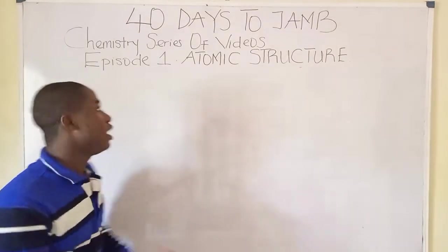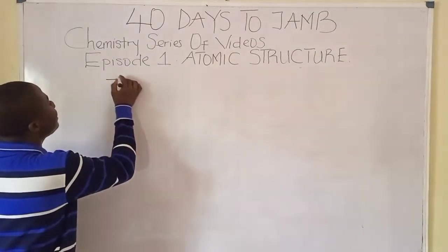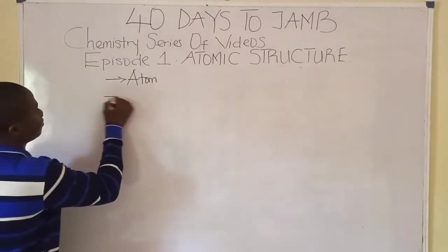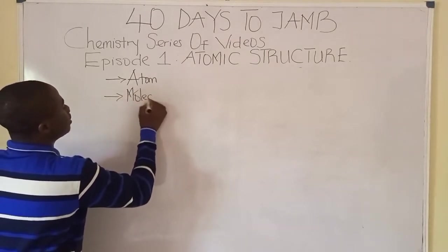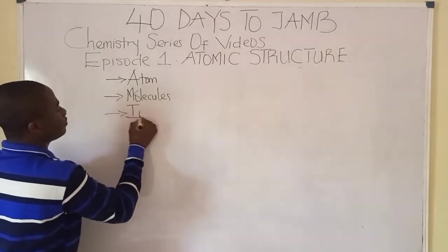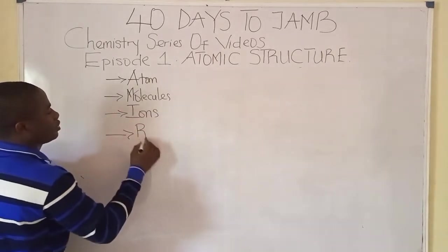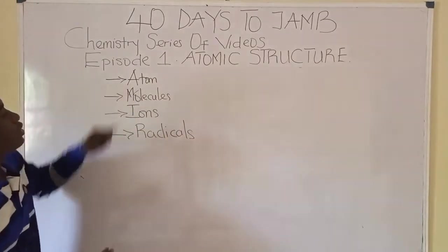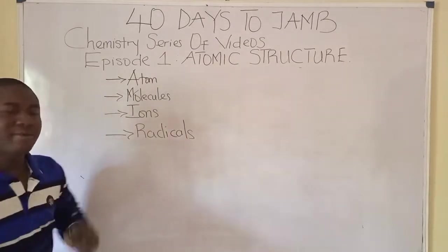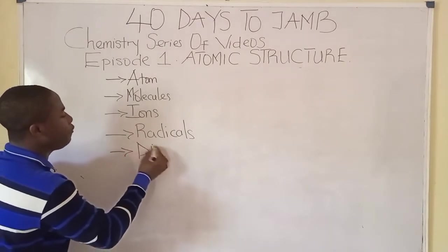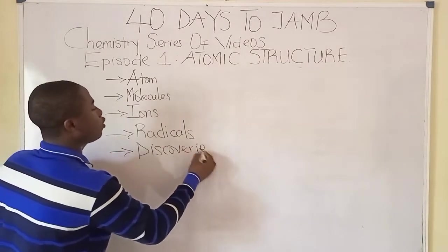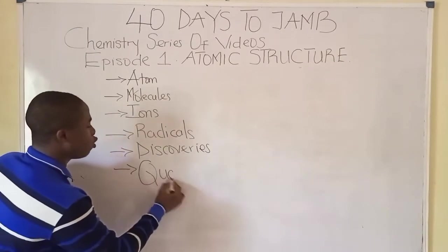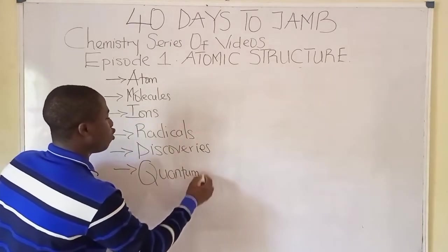In this atomic structure episode, we'll be learning the differences between atoms, molecules, ions, and radicals. After that, we'll talk about various discoveries that cut across this topic, and at the end we'll discuss quantum numbers.